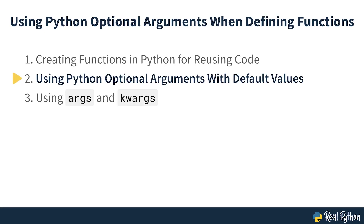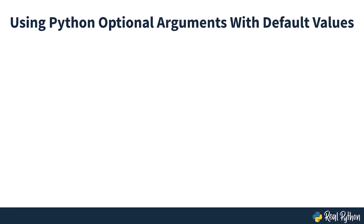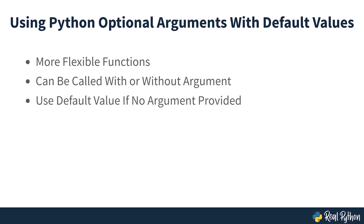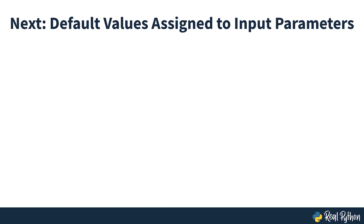Using Python optional arguments with default values. In this section, you'll learn how to define a function that takes an optional argument. Functions with optional arguments offer more flexibility in how you can use them — you can call the function with or without the argument. If there is no argument in the function call, then a default value is used. Let's get started by looking at how to assign default values to input parameters.